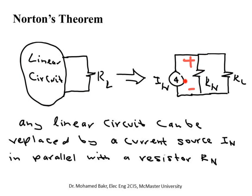This current source represents the effect of all your independent sources — all independent voltage sources and all independent current sources. If you remove all the independent sources, this Norton current reduces to zero, meaning you have an open circuit between the two terminals.